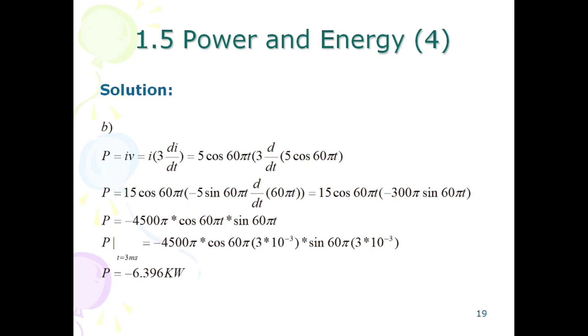Now we find the derivative of 5 cos 60 pi T. The derivative of cos is minus sine, then the derivative of the angle which is 60 pi T. Then we have to solve. The answer is minus 4500 pi cos 60 pi T into sin 60 pi T.